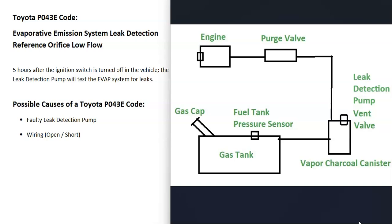There can be some differences in what's going on inside the Toyota EVAP system — it's really going to vary depending on the year, the model, and things like this. So it's always a good idea to get a diagram for your specific Toyota. The basics are that gas vapors leave the gas tank through a hose and go over to what's called a charcoal canister.